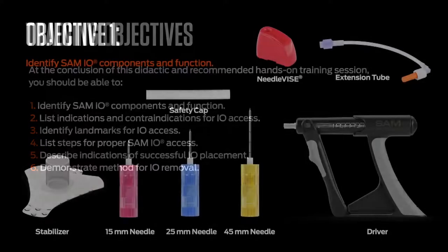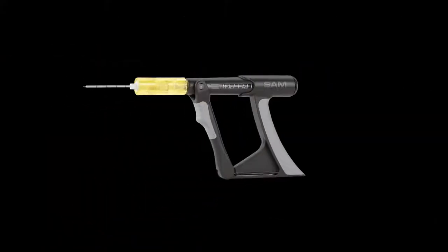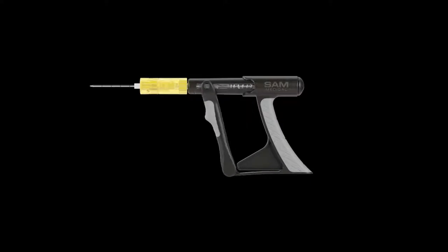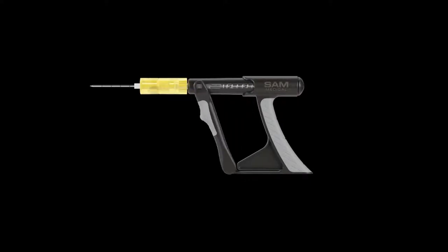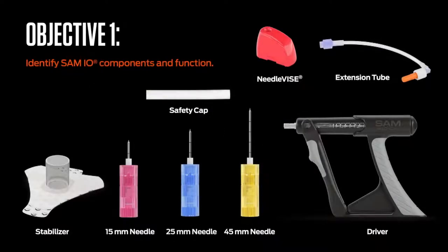The SAM.IO is a manually operated interosseous access system. Catheter placement is achieved by continuously actuating — repeatedly compressing — the driver's trigger assembly while gently guiding the needle assembly into position. Repeated full-trigger actuation completes a rotational spin of the needle assembly which, when combined with gentle downward pressure, results in a controlled I.O. placement.